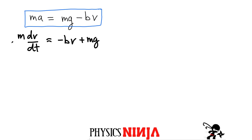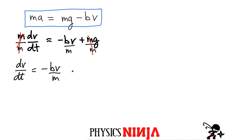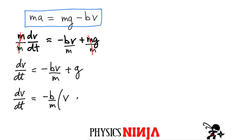Next I'll divide through by the mass to simplify things. Rewriting that expression: dv/dt equals minus (B/m)v plus g. To make the integration easier, it's useful to factor out the term minus B/m, leaving dv/dt = −(B/m) times (v − mg/B). You need both terms inside the bracket so that when multiplied by −B/m they reproduce the original expression.